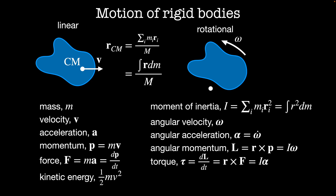If we take the time derivative of angular momentum we get torque. There are three equivalent ways of writing this: the rate of change of angular momentum dL/dt; the radius from the center of rotation cross the force; and the moment of inertia times the rate of change of the angular velocity vector, I times alpha. Because every infinitesimal mass element in the rigid body is moving, we have an additional rotational component to the kinetic energy given by one-half I times omega squared.